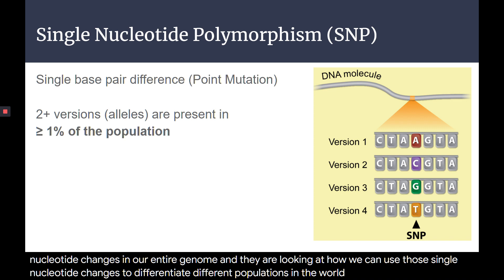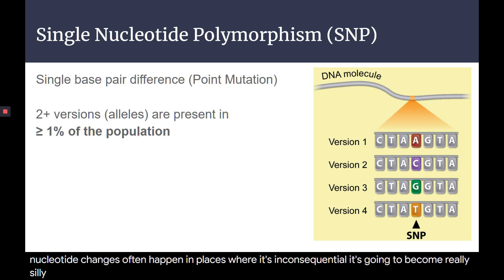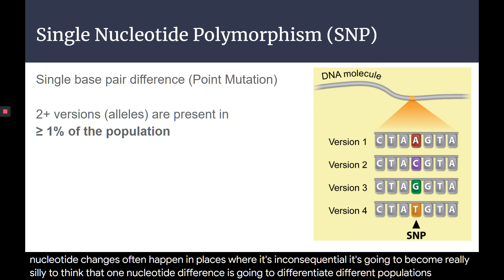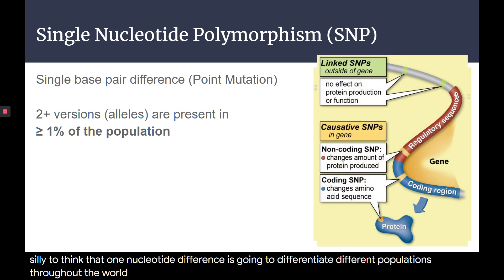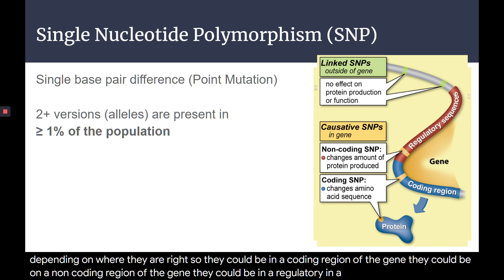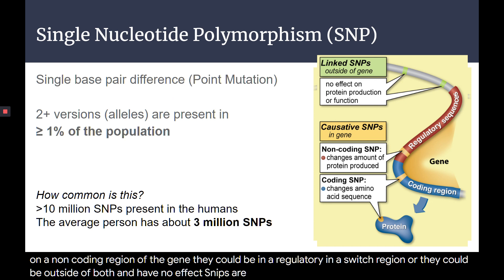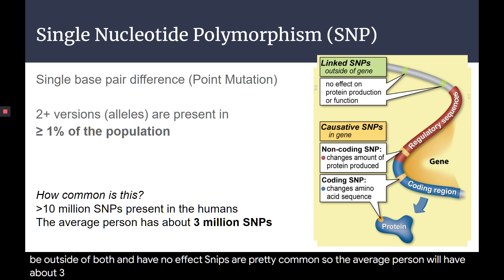They're looking at how we can use those single nucleotide changes to differentiate different populations in the world. Given that these single nucleotide changes often happen in places where it's inconsequential, it's going to become really silly to think that one nucleotide difference differentiates different populations. These single nucleotide differences have different effects depending on where they are — in a coding region, non-coding region, regulatory switch region, or outside of both with no effect. SNPs are pretty common; the average person will have about three million of these.